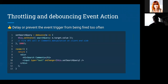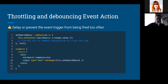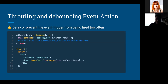Throttling and debouncing event actions: sometimes it's not necessary to fire many requests when a user types in a search input. You can delay requests using debounce or throttle functions — they're similar but slightly different. In this case, debounce is better. This gives you a performance improvement and avoids overloading your server with unnecessary requests.